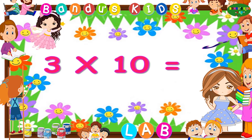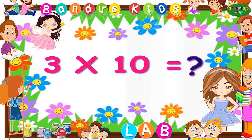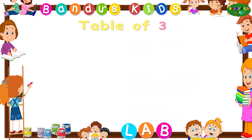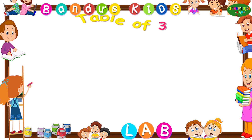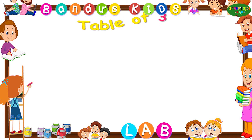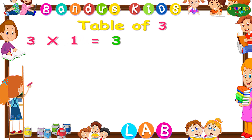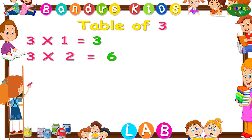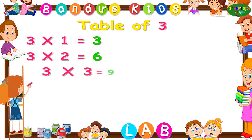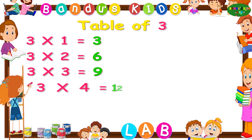Now let's revise the table of three one more time. Three ones are... three! Three twos are... six! Three threes are... nine! Three fours are... twelve!